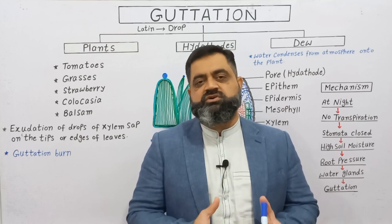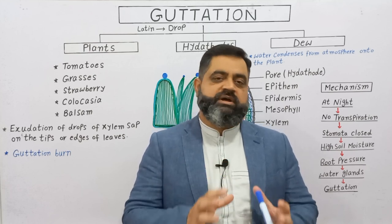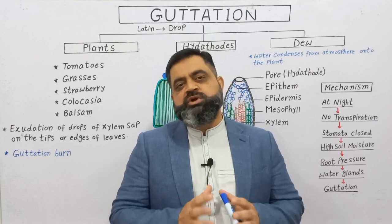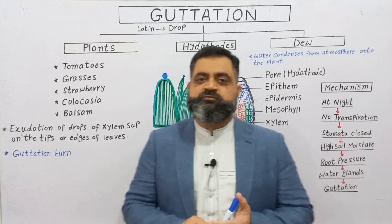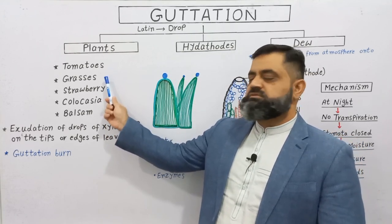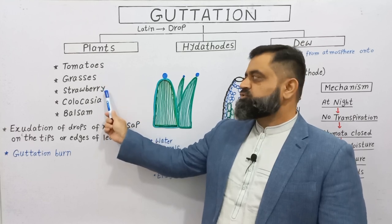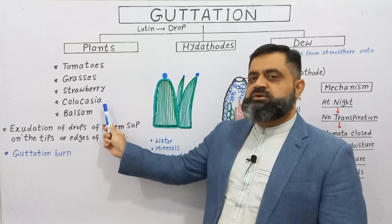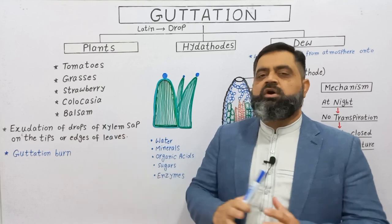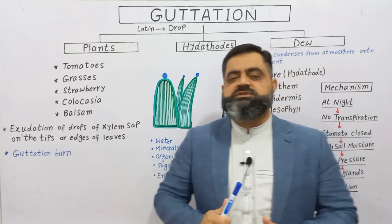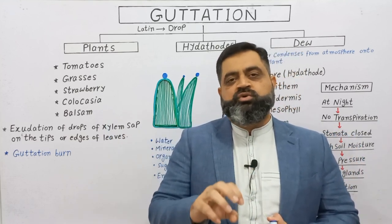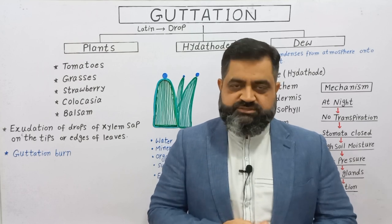Which plants usually do guttation? I have made a list for you: tomatoes, grasses, strawberries, Claucasia, balsam, along with some other species of plants — they do guttation on a regular basis.